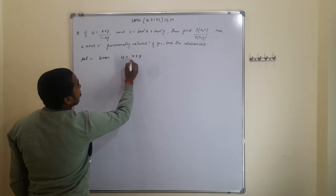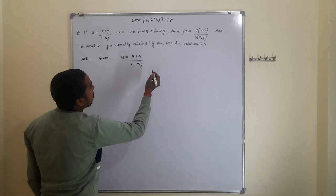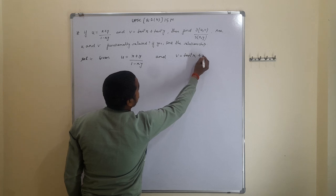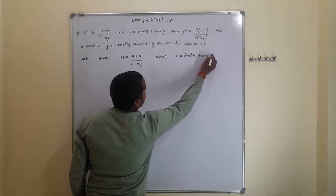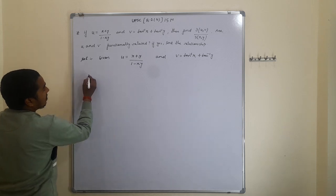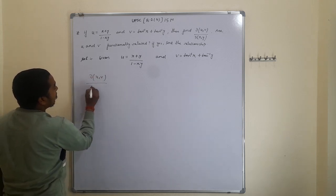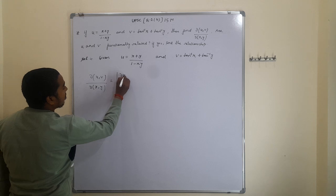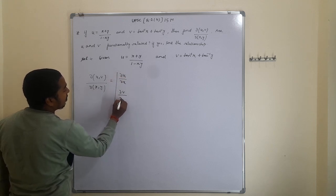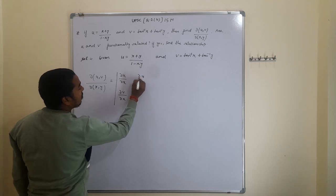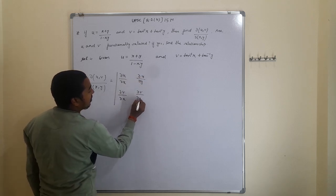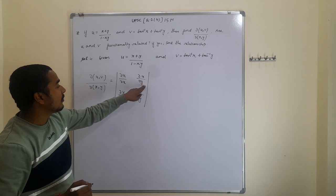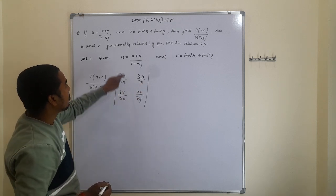Given u = (x + y) / (1 - xy) and v = tan⁻¹(x) + tan⁻¹(y). We need to find ∂(u,v)/∂(x,y), which requires computing the four partial derivatives: ∂u/∂x, ∂u/∂y, ∂v/∂x, and ∂v/∂y.